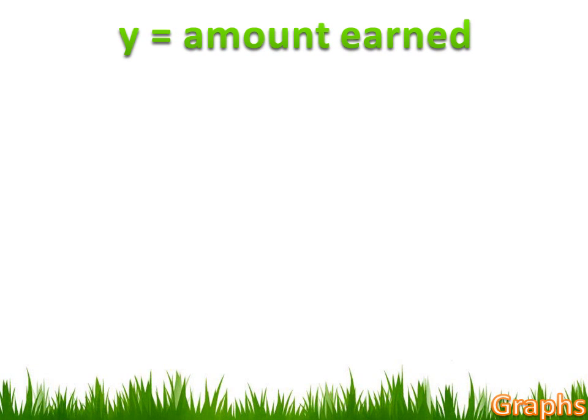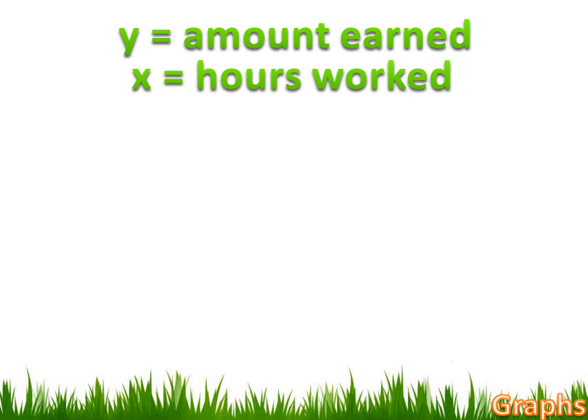To create this equation, I need some variables. We're going to call Y the amount of money earned, and we're going to call X the number of hours worked. The function would be Y equals 5X — the amount of money you earned equals $5 times the number of hours you worked.